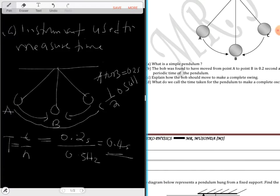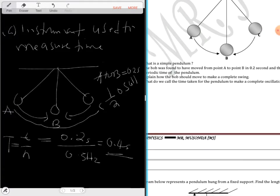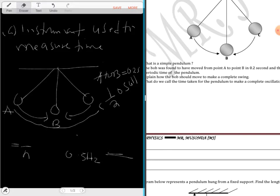Explain how the bulb should move to make a complete swing. For a bulb to make a complete swing, it should move from A to C and back to A. Then it has made a complete oscillation.